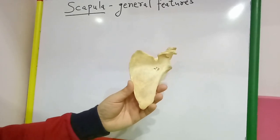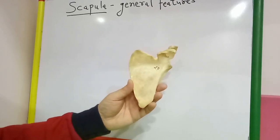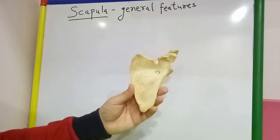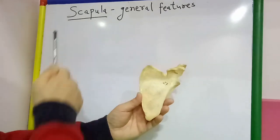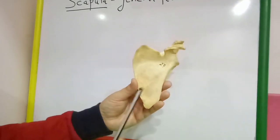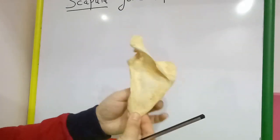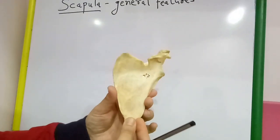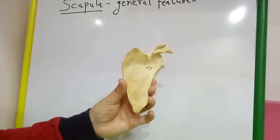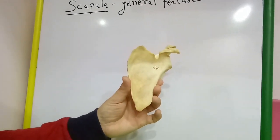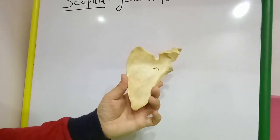Hello everyone. In this session I will demonstrate the general features of the scapula. This is the scapula, also known as the shoulder blade. It lies on the posterolateral aspect of the thoracic cage.